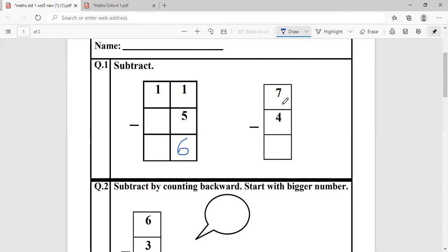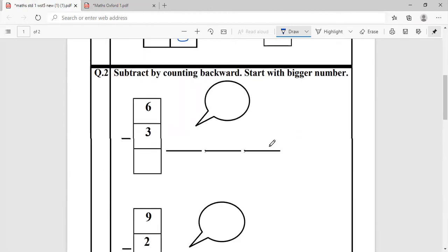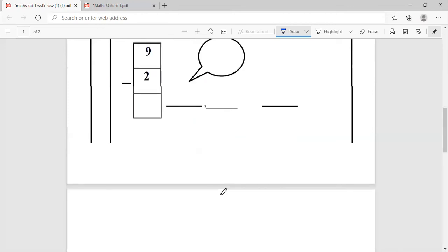Seven minus four. Seven fingers out. Minus four, five, six, seven. Answer is three. Subtract by counting backwards. Start with the bigger number. So same thing. Remember six. We will quickly write six, circle it. And you have to count back. So then the number will come. Five, four, three. And then answer will be three. Similarly, you will do the next one.